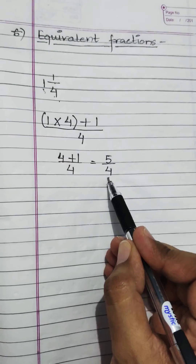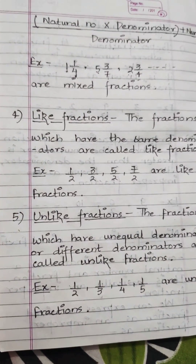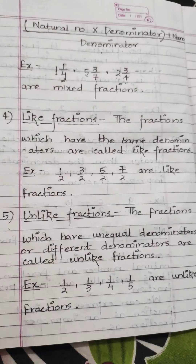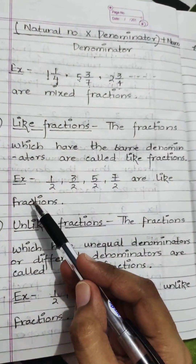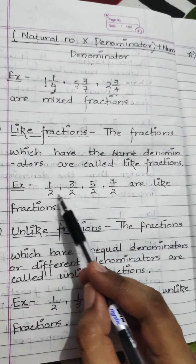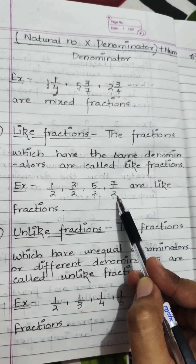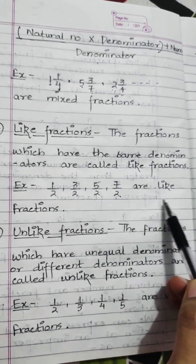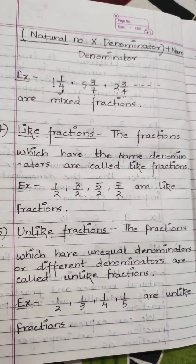The three major types of fractions are proper fraction, improper fraction, and mixed fraction. But there are two more types: like fractions and unlike fractions. Like fractions are fractions which have the same denominators. For example: 1 upon 2, 3 upon 2, 5 upon 2, and 7 upon 2 — all have denominator 2, so they are all like fractions.